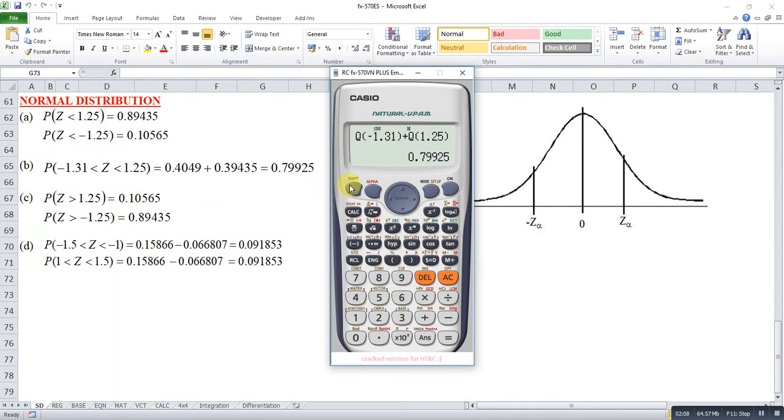Then for the third one, right tail. So Shift 1, 5. Then we look for right side. So R. Then 1.25. So we have this.